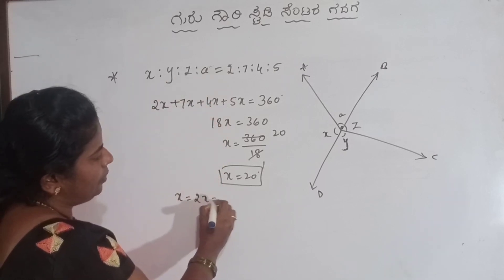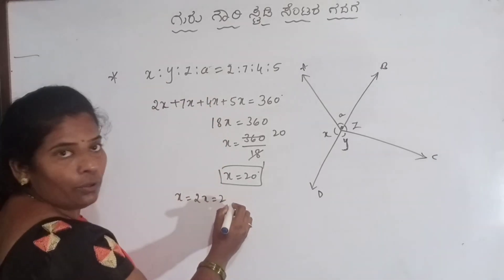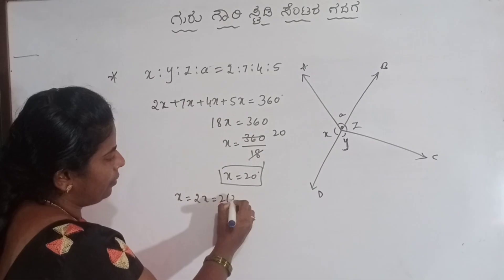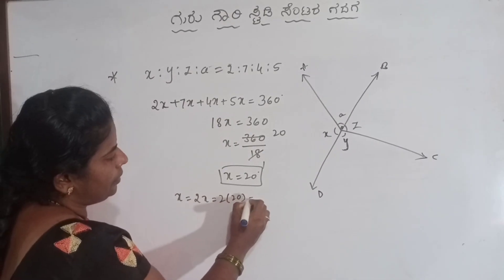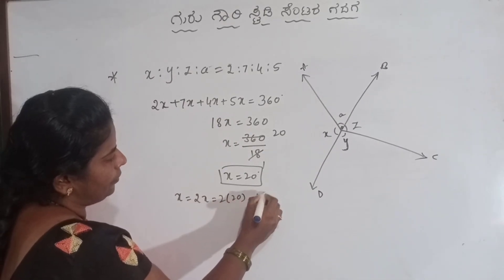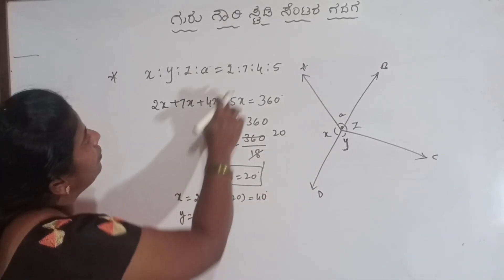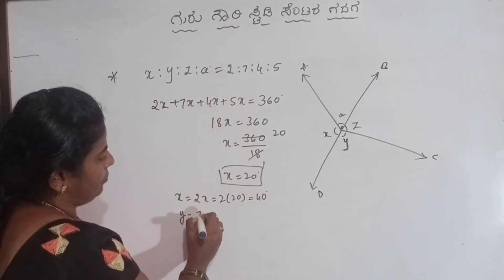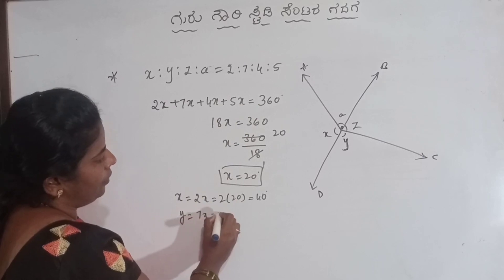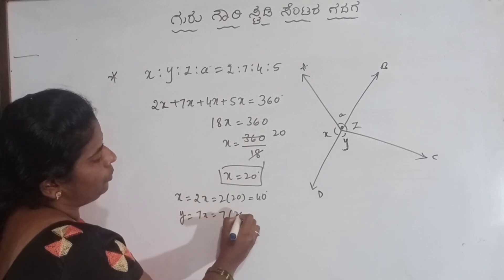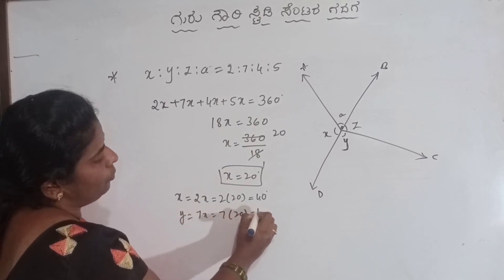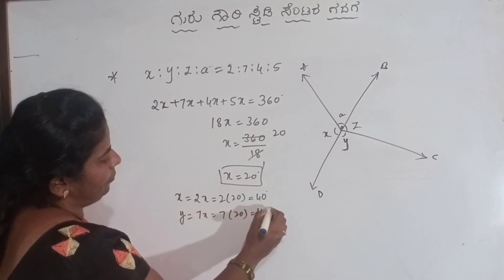2x, 2x, 20. So x is 3, giving 40 degree. Y angle: x value 20 gives 140 degree.